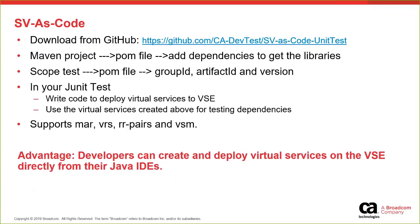The next tool is SV as Code — Service Virtualization as Code. You can download it from GitHub. In your Maven project, use the POM file and add the dependencies — add the group ID, artifact version, and so on. In a JUnit or unit test, write code to deploy virtual services to the VSC. The assumption is that you have some RR pairs, a VSM, a VRS recording file, or a MAR file already created. Use these different formats to create your virtual services directly through code — no need to go to the workstation or portal. You could use Eclipse, IntelliJ, or any other IDE. We use Java annotations to facilitate the creation of virtual services.